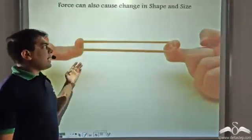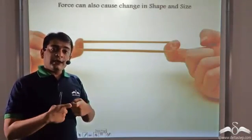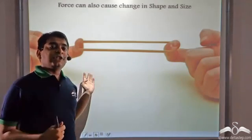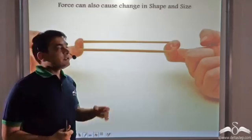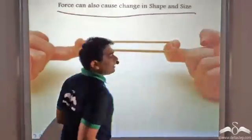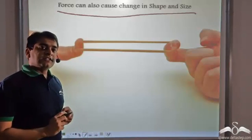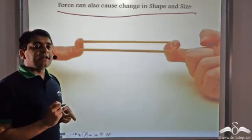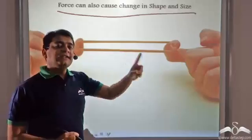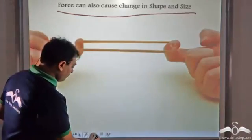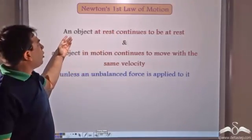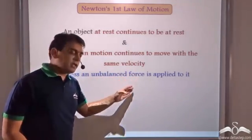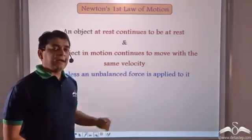Further, what happens when we pull a rubber band? Pulling is a force, so when you exert force onto the rubber band, the shape and size of the rubber band changes. So force can also cause change in shape and size. To conclude: force causes change in state of motion, and change in state of motion can be change in speed, change in direction, change in shape, or change in size. Newton's first law states that an object at rest continues to be at rest and an object in motion continues to move with the same velocity unless an unbalanced force is applied to it.